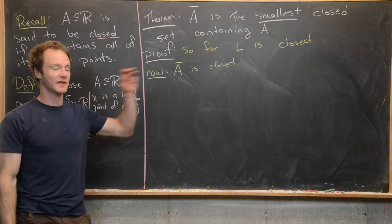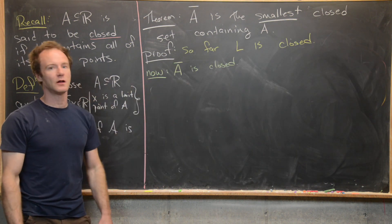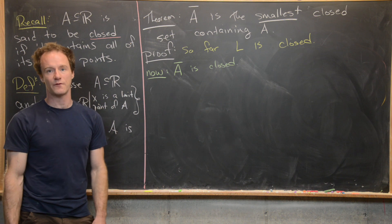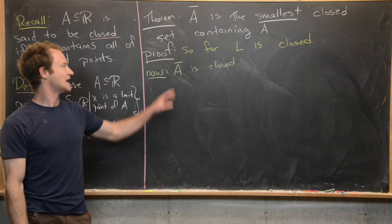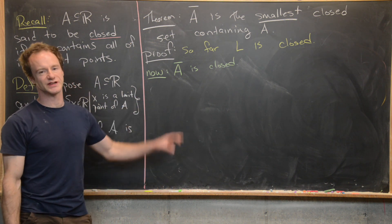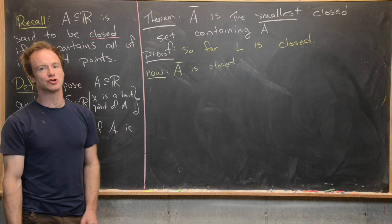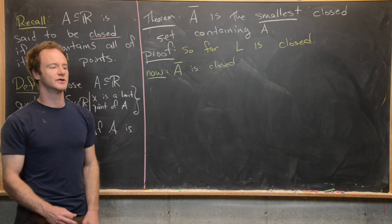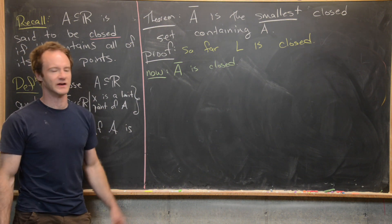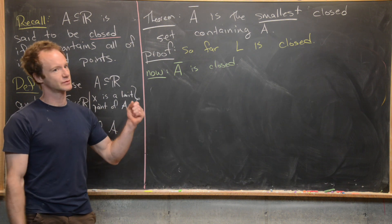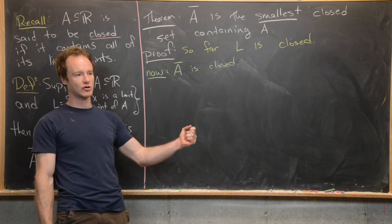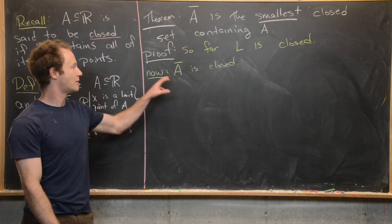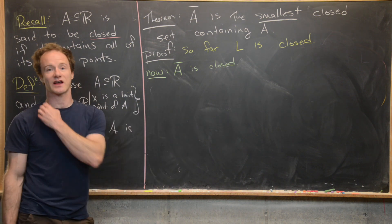We just finished showing that L, the set of all limit points of A, is itself a closed set. Now we want to show that A-bar is closed — the closure of A is closed. If it weren't closed, we'd have a problem with our definitions, because we shouldn't call something the closure of a set unless it itself is closed. We need to check that carefully.